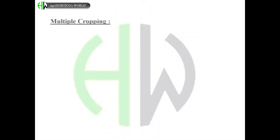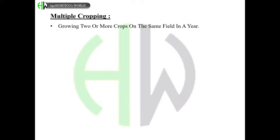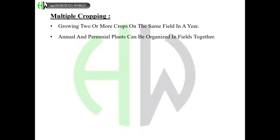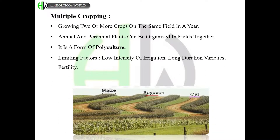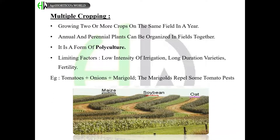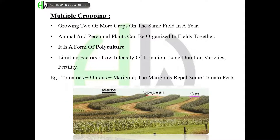Multiple cropping is the growing of two or more crops on the same field in a year. Annual and perennial plants can be organized in fields together; it is a form of polyculture. Limiting factors include low intensity of irrigation and long-duration varieties. An example is tomatoes with onions and marigold, where the marigolds repel some tomato pests.